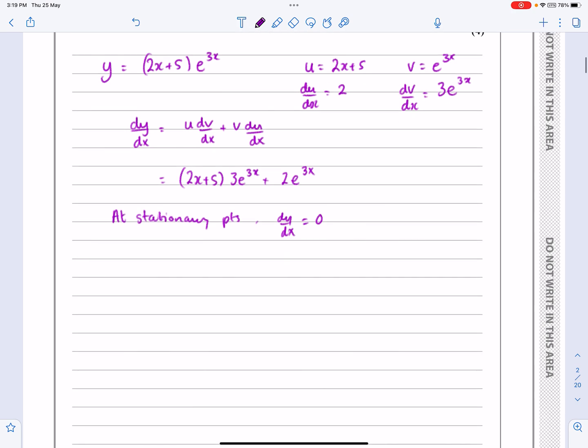So if I get that, then I'm going to have this thing equal to 0. I'm just going to tidy up this bit here now, and I'm actually going to write this as 3e^(3x)(2x + 5) + 2e^(3x) equals 0. I've just moved it around just slightly there.